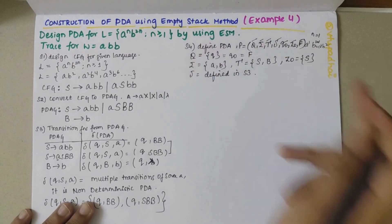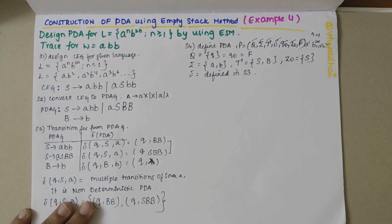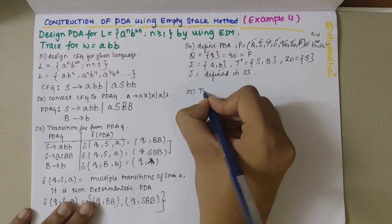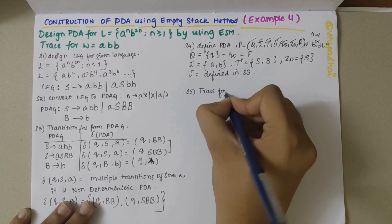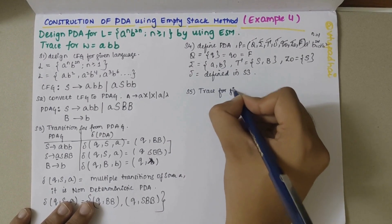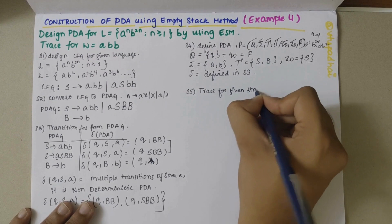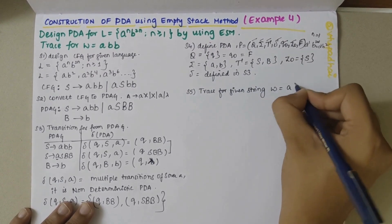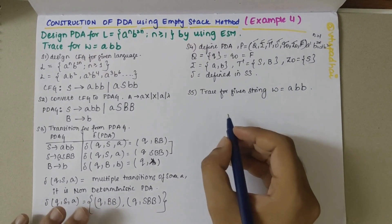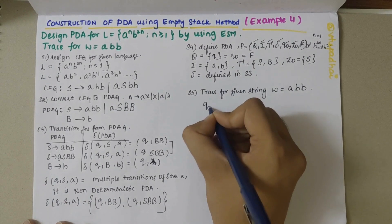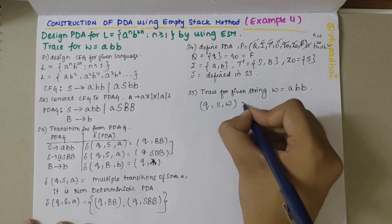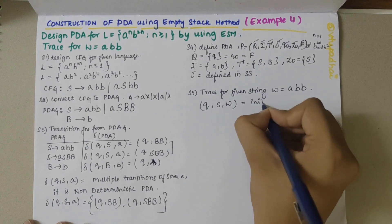My fifth step is to trace for the given string w = abb. I'll write the initial configuration as (q, S, abb), where q is the start state, S is the initial stack symbol, and abb is the input string.